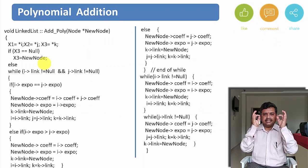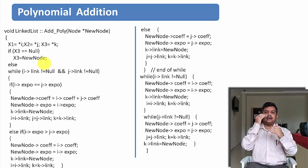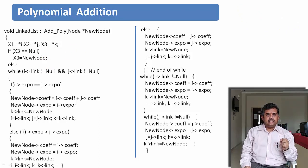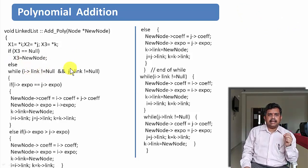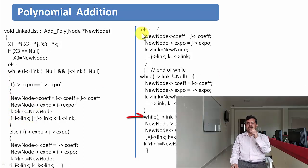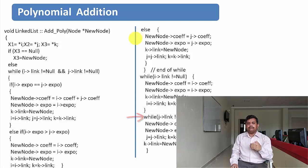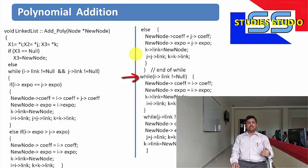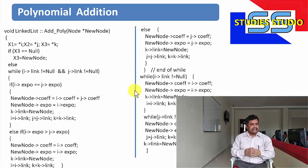You can go through this particular program. The same 3 cases are described in the code. The loop runs while both i's link and j's link are not null. If either becomes null, the remaining terms of the other polynomial are appended. This is how polynomial addition is implemented using a linked list in C++.